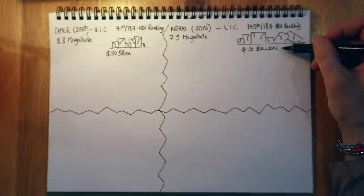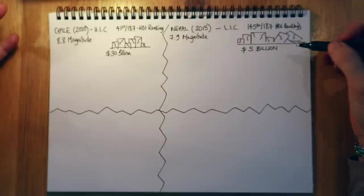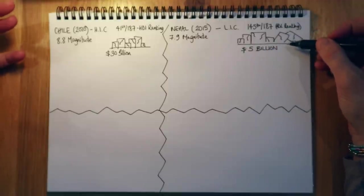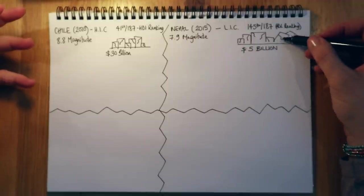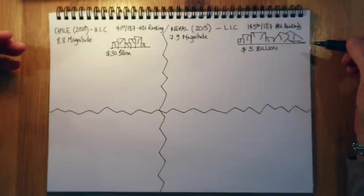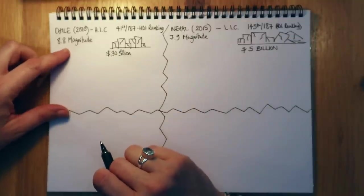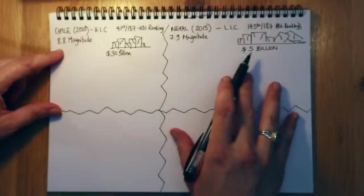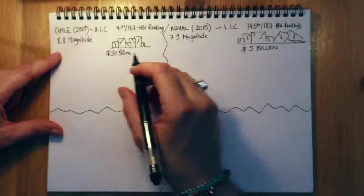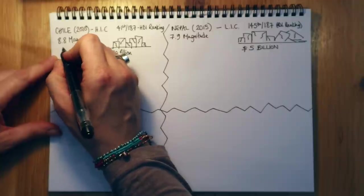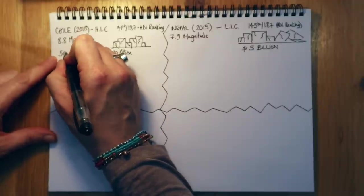And that's because again, the type of infrastructure and materials and services were of a lower net worth, a lower quality than that that we see in Chile. Now if we look at death toll, that's always a big indicator. In Chile, 500 people died.